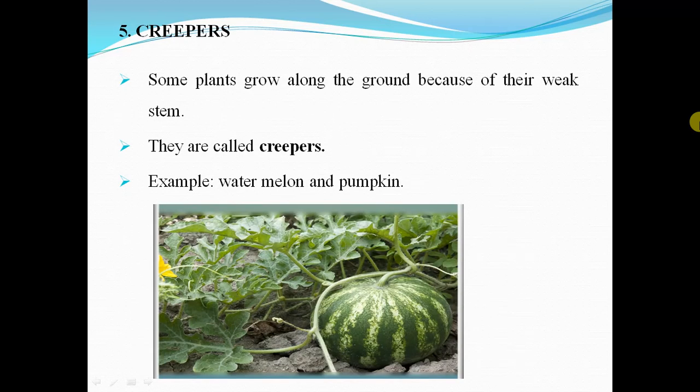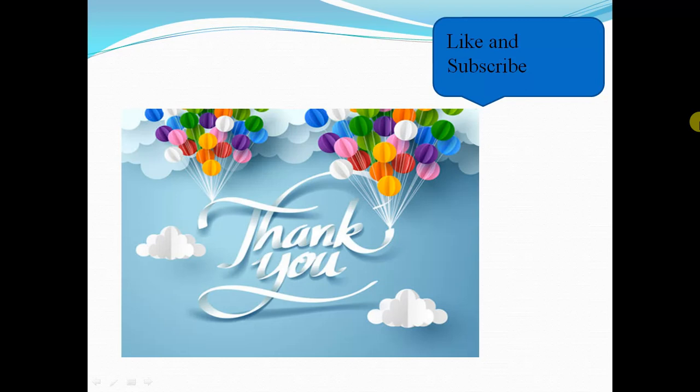Creepers. Some plants grow along the ground because of their weak stem — they are called creepers. Examples of creepers are watermelon and pumpkin. They lie down on the ground and do not climb up. Thank you for watching this video.